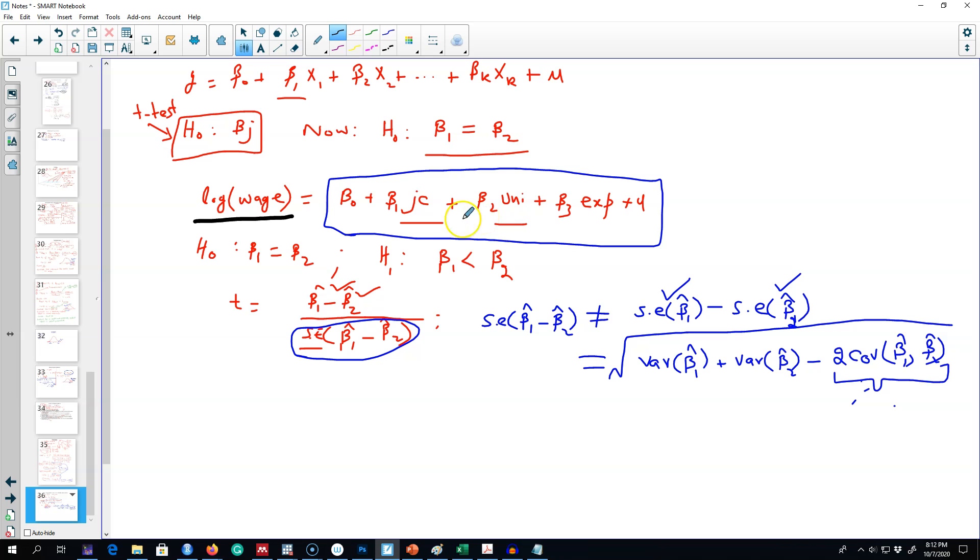As I said in my previous video, it is not possible to test this type of hypothesis because of the difficulty of getting the covariance between beta 1 and beta 2 from the regression output. An alternative way of estimating a model like this is to introduce another parameter and tweak this model a little bit. Let's define theta 1 equals beta 1 minus beta 2.